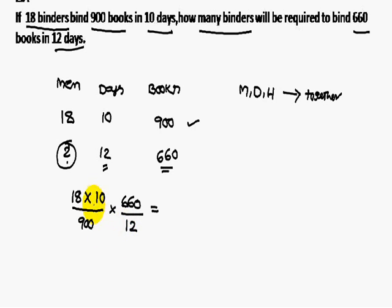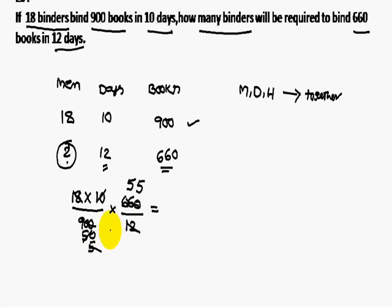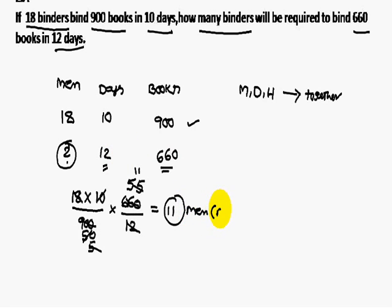Simplifying: 18 goes in, 10 simplifies to 5, and 12 simplifies — giving 11. Therefore, 11 binders are required to complete binding 660 books in 12 days. This is the method to solve this type of problem.